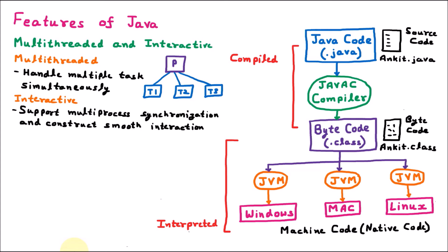The next feature of Java is that it is high performance. In Java, we have multi-threading, meaning a process has multiple threads and those tasks can be executed very fast. Because of that, the speed of a Java program is very fast, providing high performance. The speed of execution of a Java program is very high due to multi-threading.